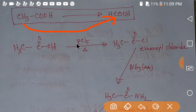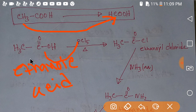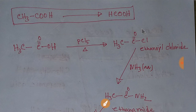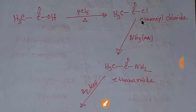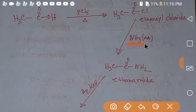If we add phosphorus pentachloride to ethanoic acid, we will get the acyl chloride, that is ethanoyl chloride. And if you add aqueous ammonia, then the Cl will be replaced by NH2 and you will get the amide — ethanamide.